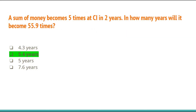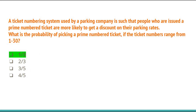A sum of money becomes five times at compound interest in two years. In how many years will it become 55.9 times? Solve using your concept of compound interest and you will get the answer as 5.4 years. Next, a parking company issues prime number tickets for discounts. What is the probability of picking a prime number ticket if ticket numbers range from 1 to 30? Applying prime number and probability concepts, the answer is 1/3.